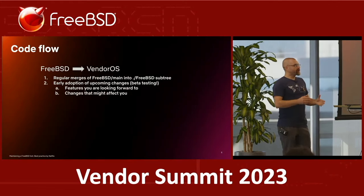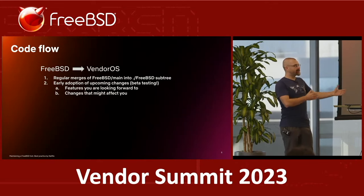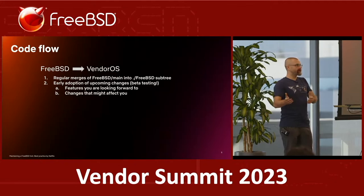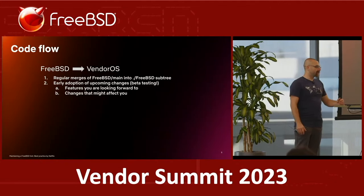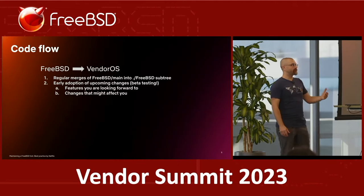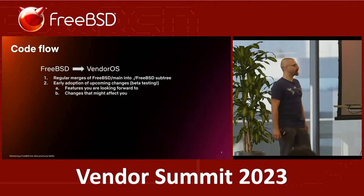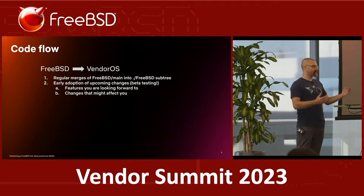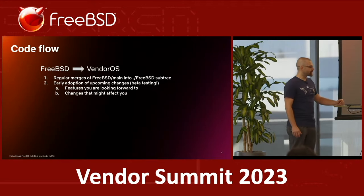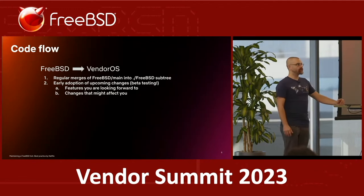From that point, you start developing. You hack outside of the FreeBSD directory, and you also hack inside the FreeBSD directory — which means modifying your FreeBSD, making a fork. There is a code flow in two directions: code flow that brings new FreeBSD updates to your operating system, and the opposite code flow. Let's first talk about the code that comes from the open source community to you.